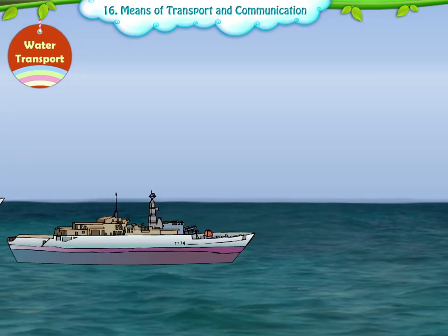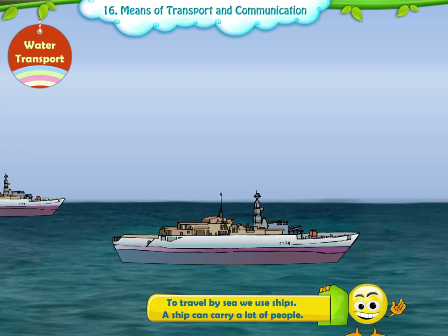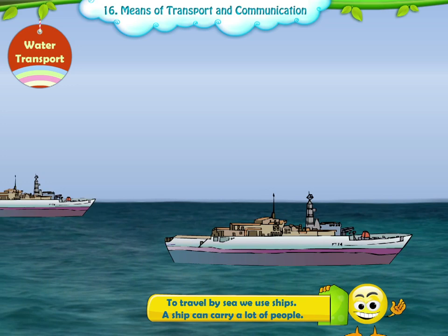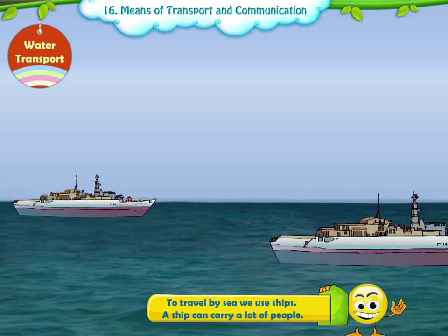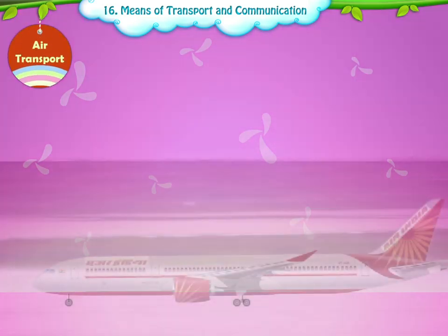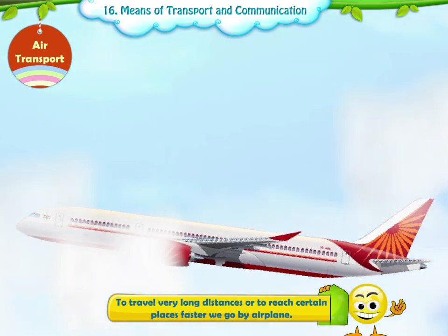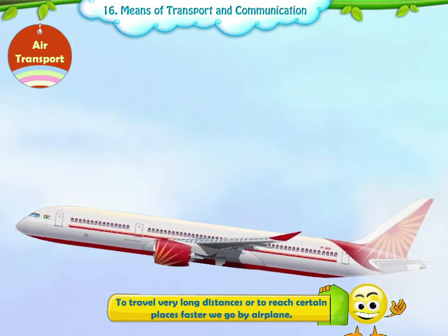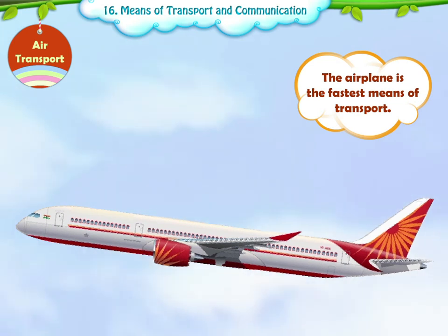Second, water transport. To travel by sea, we use ships. A ship can carry a lot of people. Third, air transport. To travel very long distances or to reach certain places faster, we go by airplanes. The airplane is the fastest means of transport.